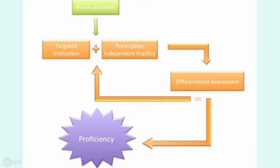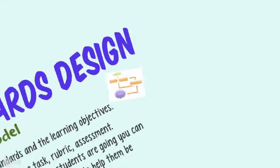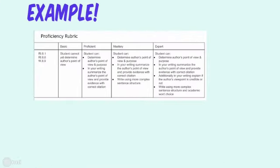You give students very targeted instruction and possibly some independent practice. Especially if you're using the flipped model, you'll have quite a lot of application in class where you're coaching kids through applying what they know. Then you give them what we call a proficiency assessment — some call it a mastery model — to show that they are proficient on the standards. I'm going to show you an example: I'm an eighth grade language arts teacher.